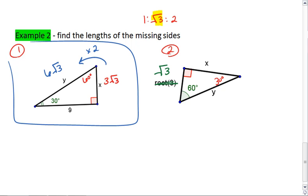For the second triangle, we are given the shorter side this time. We're given the square root of 3, which is our shortest side, so that's our 1 in the ratio.